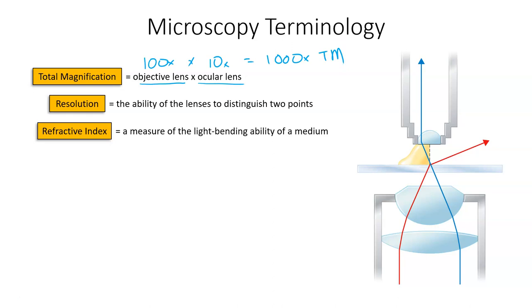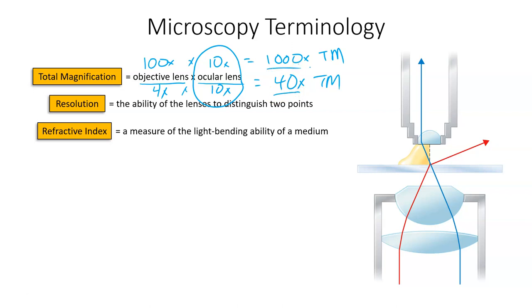Our microscopes are not always going to be 1,000 times total magnification. If you take the four times objective lens and run it through the 10 times ocular lens — the ocular lens doesn't change — you get 40 times total magnification. The only change you make between magnifications is changing the objective lens. Our microscopes will range from the lowest magnification of 40 times all the way up to the highest magnification of 1,000 times.